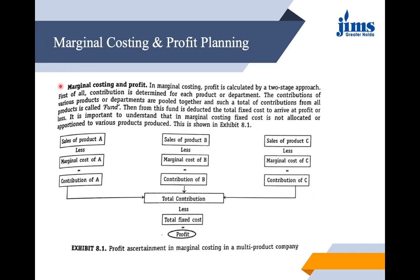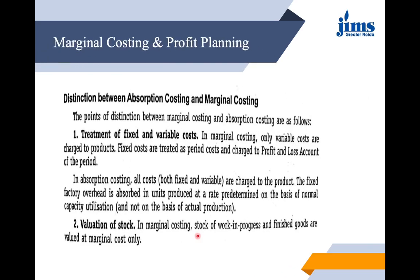In marginal costing, profit is calculated using a two-stage approach. First, contribution is determined for each product or department. Then, the contributions of all products or departments are pooled together into a fund. From this fund, the total fixed cost is deducted to arrive at profit or loss. Importantly, in marginal costing, fixed cost is not allocated or apportioned to individual products. For example: Contribution (Product A + B + C) − Fixed Cost = Profit.